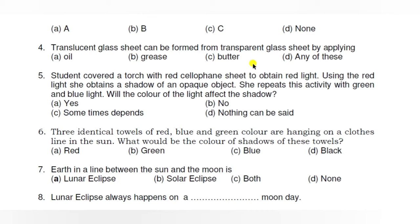Any of these means oil, grease, or butter — any of these materials applied to a transparent glass sheet will make it translucent.